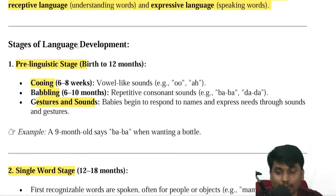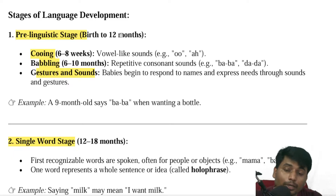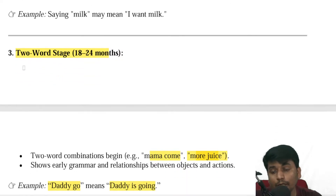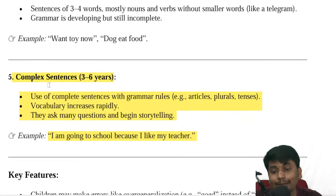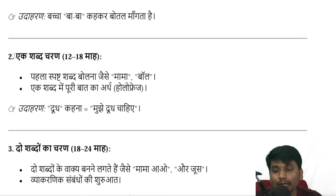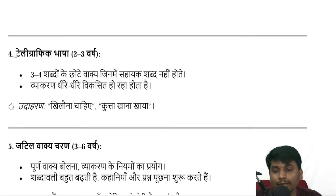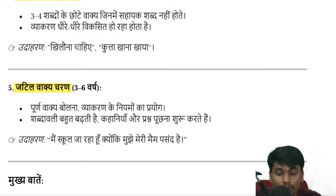Summary of language development stages: Pre-linguistic stage — birth to 12 months. Single-word stage — around 18 months. Telegraphic stage — 2 to 3 years. Complex sentence stage — 3 to 6 years. Then telegraphic and complex sentences. Please note each stage's summary.